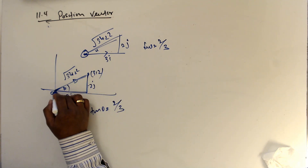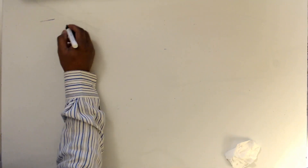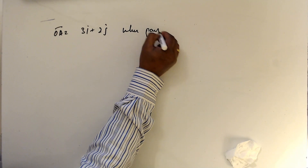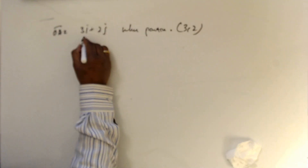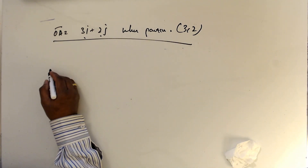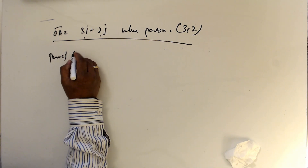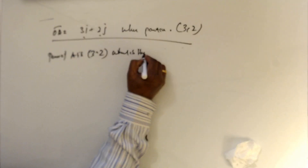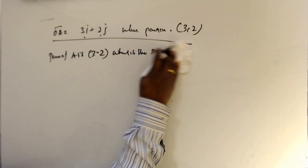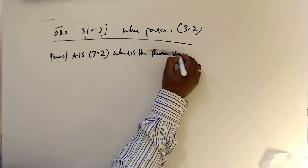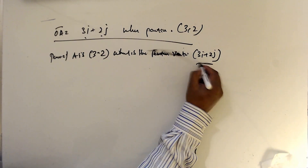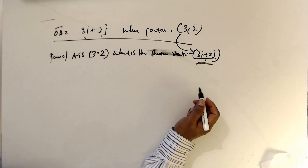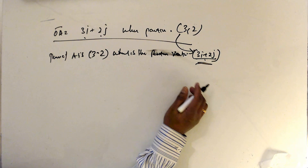Now let me take OA equal to 3i plus 2j. So what is the position? Position is (3, 2) — this is the x value, this is the y value. Position of A is (3, 2). What is the position vector? The position vector is 3i plus 2j. So this is the advantage: if you know the position vector you can write the position, and if you know the position you can write the position vector. Let's discuss the exercise.